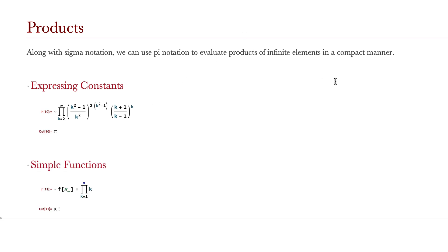We can also use pi notation to create definitions for simple functions. For example, if we take the product of every integer k from 1 to a given x, it comes out to be the factorial of x.